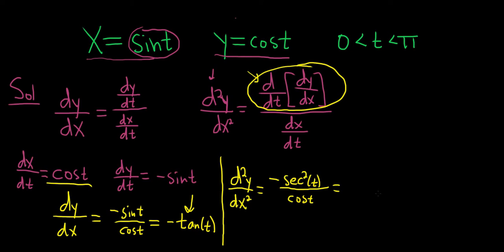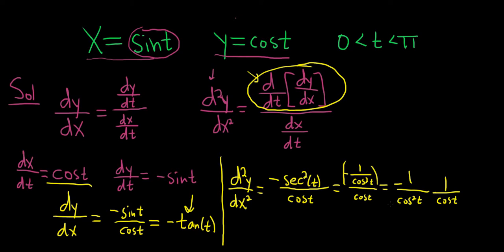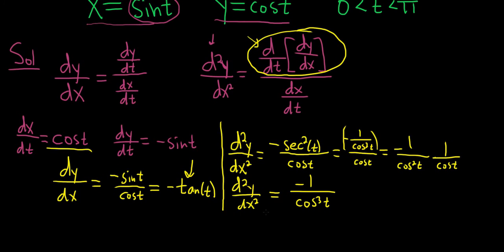Since sec²(t) = 1/cos²(t), we have -1/cos²(t) divided by cos(t). Dividing by cos(t) means multiplying by its reciprocal, so this is -1/cos²(t) × 1/cos(t) = -1/cos³(t). So our second derivative is -1/cos³(t). We should also keep in mind that t is between 0 and π.